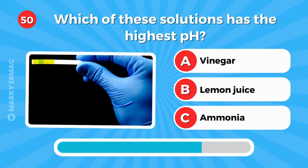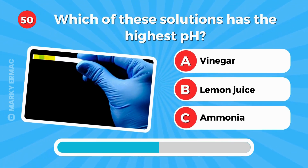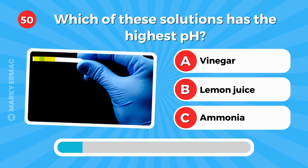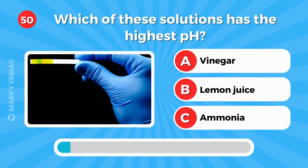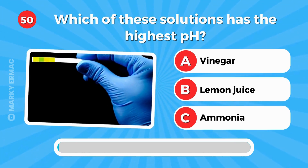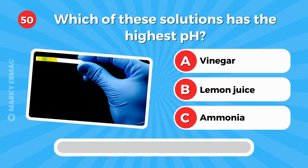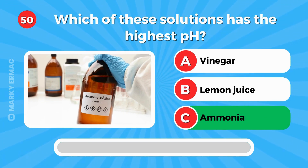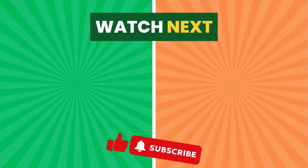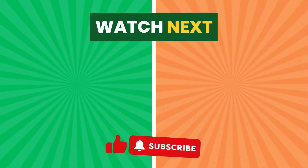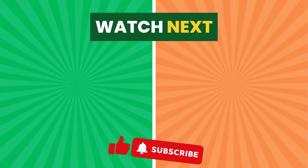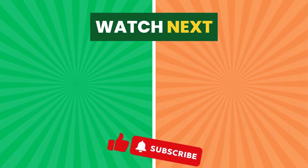And for the last question: which of these solutions has the highest pH? Vinegar, lemon juice, or ammonia? Ammonia. Comment your scores below and choose your next challenge. Don't forget to like and subscribe.